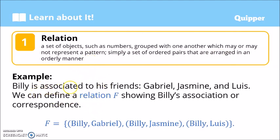Example: Billy is associated to his friends Gabriel, Jasmine, and Louise. We can define a relation F showing Billy's association or correspondence. Since they are Billy's friends, we can denote this relation as F. So F is the set of Billy to Gabriel, Billy to Jasmine, and Billy to Louise. So this is an example of a relation.